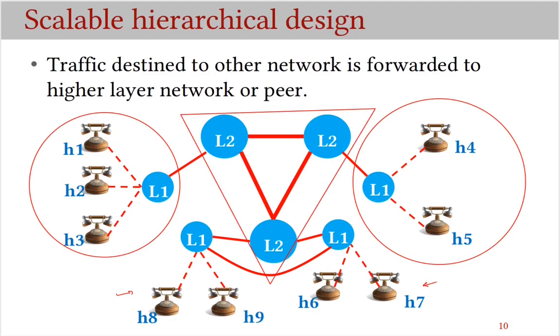Traffic within the network is forwarded as before. Suppose h1 calls h3, then that call would go to this switch and then forwarded to h3. However, the traffic that is destined to other networks is forwarded to a higher layer network or to a peer. For example, call from h2 to h5 is first handed over to a higher layer network, which carries to the right layer one network, and then this call is forwarded to the right recipient. You might have recalled our discussion of telephone network in the previous video.